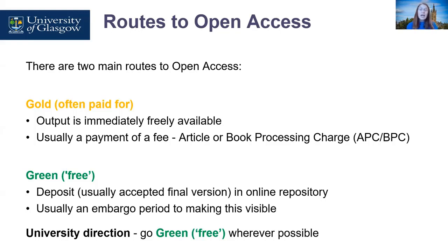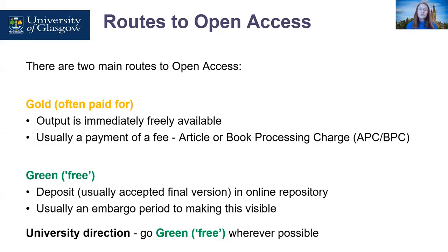Book processing charges can be in the region of £10,000. When the published version — the version of record — is freely available on the publisher's site, this is often referred to as gold open access. When the accepted version is available on a repository without charge, this is often referred to as green open access, and the university's approach is to take the green route wherever it is possible to do so.